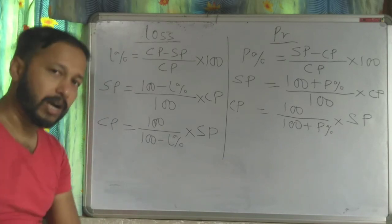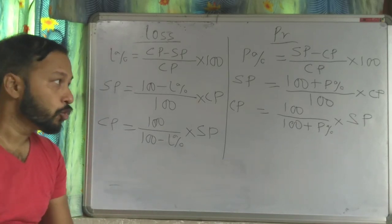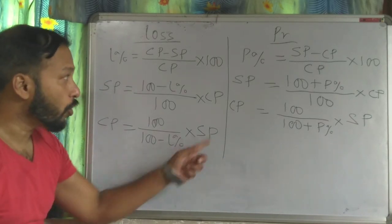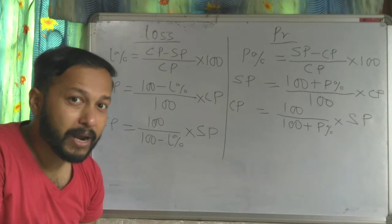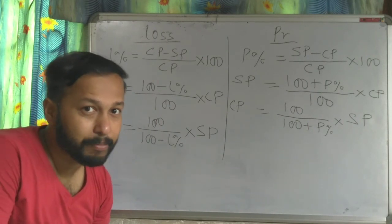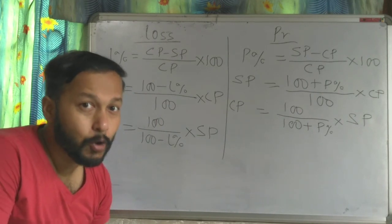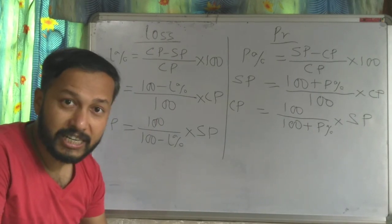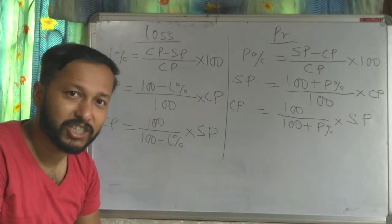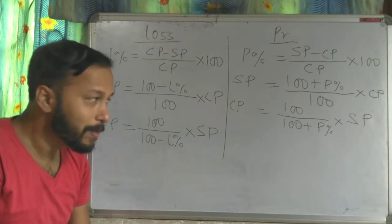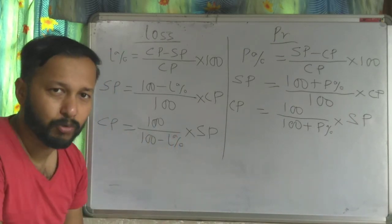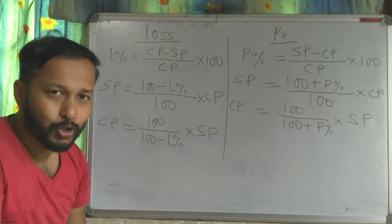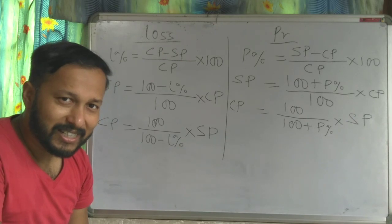These are the formulas. By using all these formulas, you can find cost price, selling price, profit percentage, or loss percentage. You have to remember these formulas. Let us start the sums now.